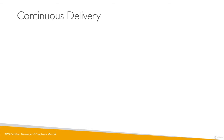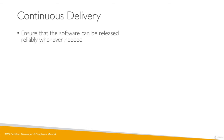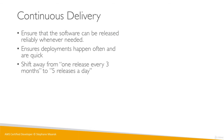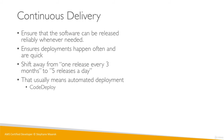Finally, we have continuous delivery. We want to ensure that software can be released reliably whenever needed, and that deployments happen often and are quick. We don't want to wait three days or ship one release every three months — we want to move from hard releases every three months to releasing five times a day or even more. Some companies release every hour, which means you have to automate everything. That whole automation around deployment is what we're looking into, and for this we can use CodeDeploy, Jenkins CD, Spinnaker, or other tools. In this course, we're going to learn about AWS CodeDeploy.